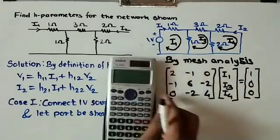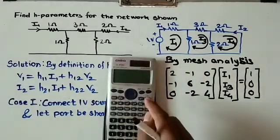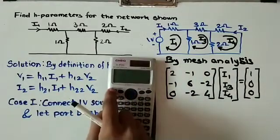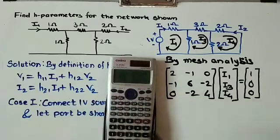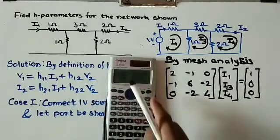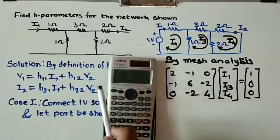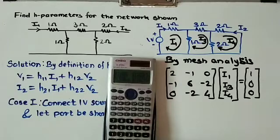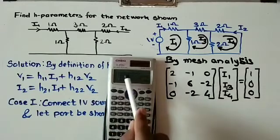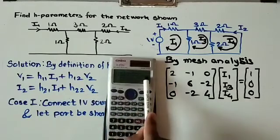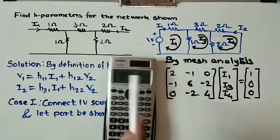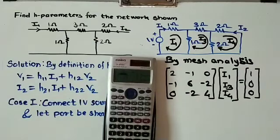We use the calculator in equation mode by pressing Shift and Mode/Setup. Option 5 is equation mode. Since our matrix is 3×3, we select option 2 in the calculator.